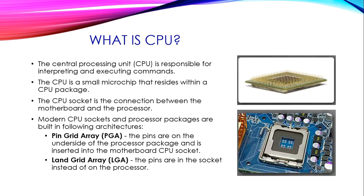The CPU, or Central Processing Unit, is also known as the brain of our computer and is the most important part. The CPU is responsible for interpreting and executing commands. It is a small microchip that resides inside a CPU package. The CPU socket is the connection between the motherboard and the processor. Modern CPU sockets are built in two architectures: PGA (Pin Grid Array) and LGA (Land Grid Array). In PGA, the pins are on the underside of the processor package and inserted into the motherboard socket. In LGA, the pins are in the socket instead of on the processor.